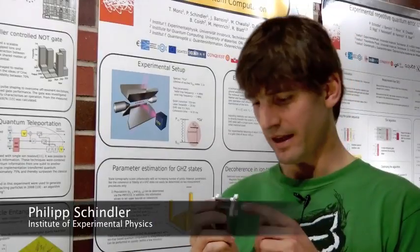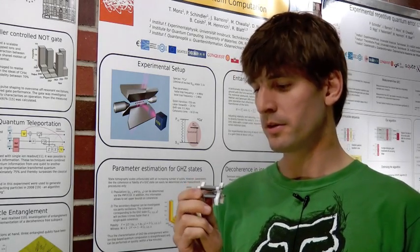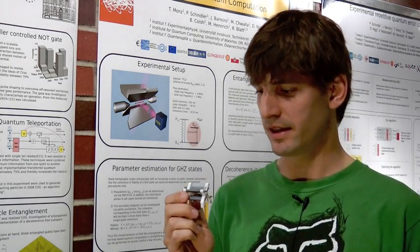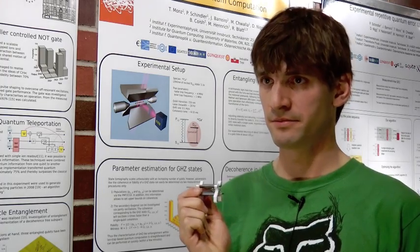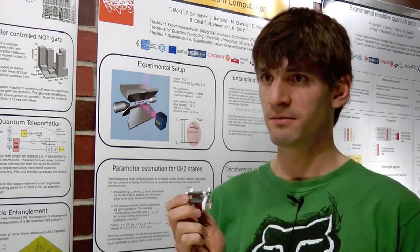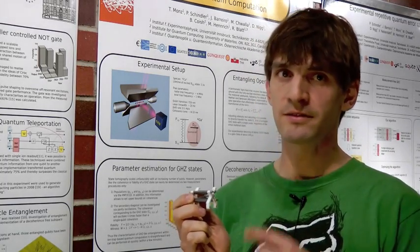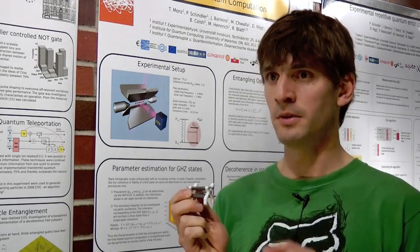We trap the ions in a trap like this with the help of electromagnetic fields. Each qubit is encoded in the electronic states of a single ion. We will now manipulate the state of the qubit with the help of laser pulses. In the case of error correction, we have one system qubit which carries the information and two ancilla qubits.